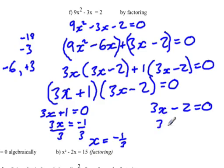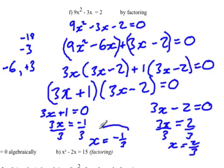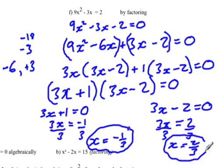And we add 2 to both sides, so this is 3x = 2, divide both sides by 3, x = 2/3. So our two solutions are x = -1/3 and x = positive 2/3.